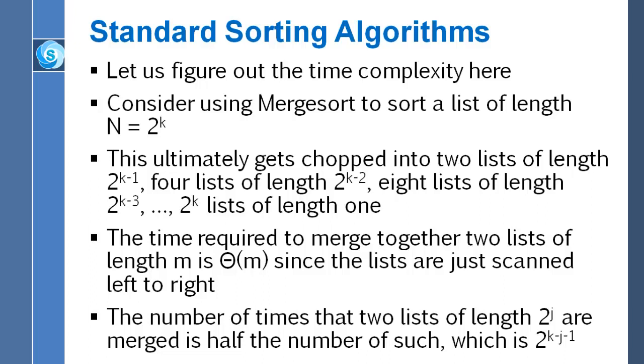You have two to the k minus j sublists each of length two to the j. And they have to be merged together in pairs to go from one level of recursion up to the level above that. So the number of such lists is two to the k minus j. Half of that is the number of mergings that have to be done to take you from one level up to the next level. Half of two to the k minus j is two to the k minus j minus one.